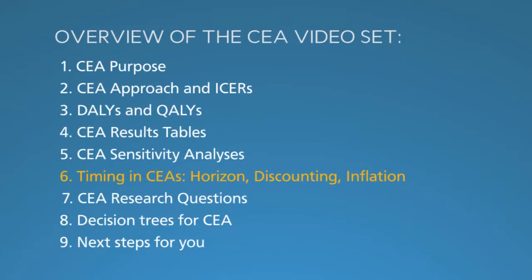In the beginning of this series, you learned why to do cost-effectiveness analysis and how to compare net costs to health outcomes. Then you learned about DALYs and QALYs and how to present cost-effectiveness analysis results. In segment five, you learned about using sensitivity analysis to quantify uncertainty.